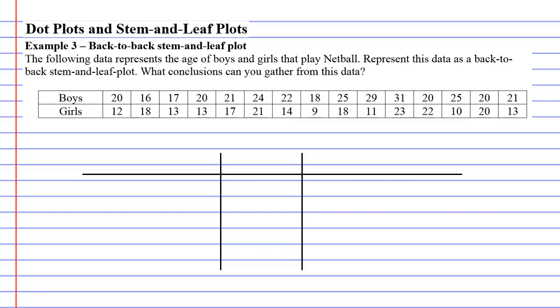So the following data represents the age of boys and girls that play netball. We're going to represent it as a back-to-back stem and leaf plot and what conclusions can you gather from this data. So we'll make some conclusions after we've made it.